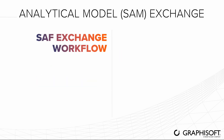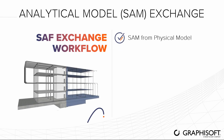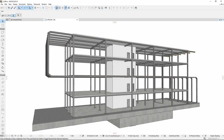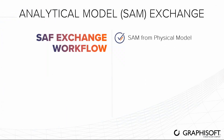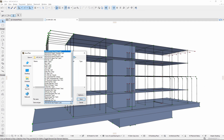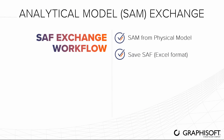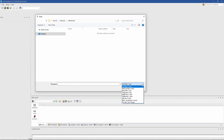Now let's see a real SAF exchange workflow between structural engineers working in ARCHICAD and in structural analysis applications. First, generate the structural analytical model in ARCHICAD, then save it as an SAF using the Excel format. The structural engineer receives the file and opens it in a structural analysis application.